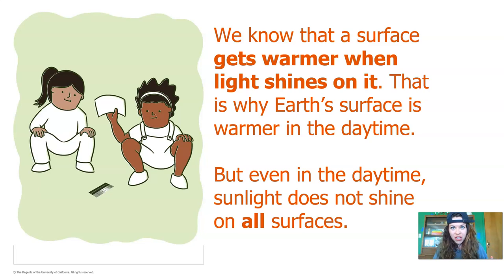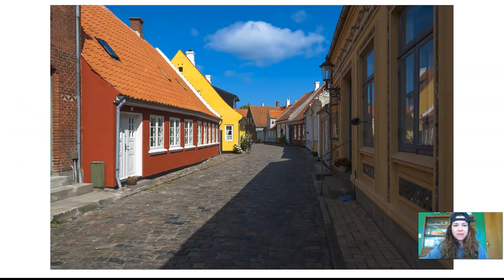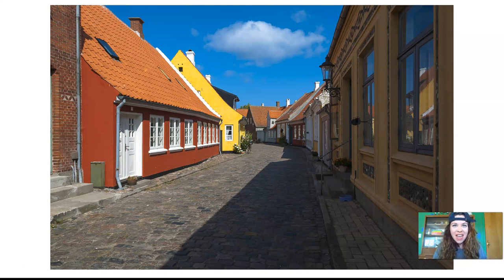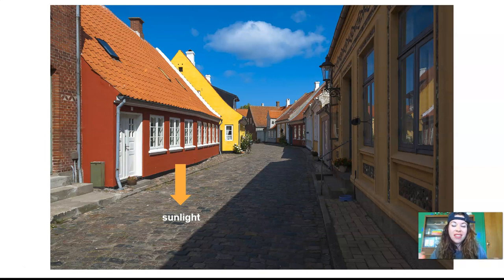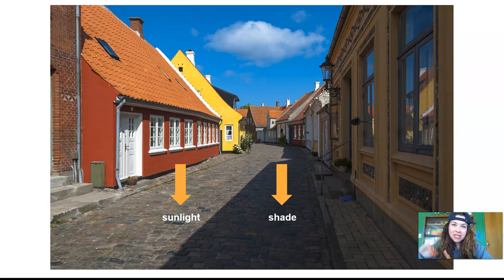We know that a surface gets warmer when light shines on it — that is why Earth's surface is warmer in the daytime. But even in the daytime, sunlight does not shine on all surfaces. Take a look at this picture. Do you see an area of the street that has sunlight shining on it? You can tell because it looks really lit up. There's also shade over here. Shade is when the sunlight is blocked by something, creating a dark area. In this picture, the building is blocking the sunlight and creating an area of shade.